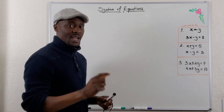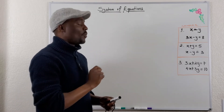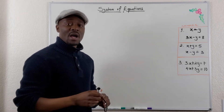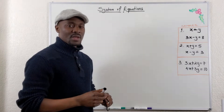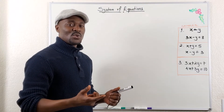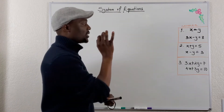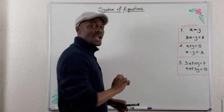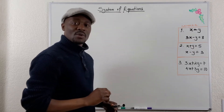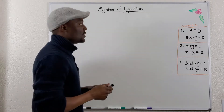It says x equals y, and 3x minus y equals 8. That way you don't have to do a lot of work other than just plug in something here, and you'll be able to solve the question quickly. Let me show you what to do.